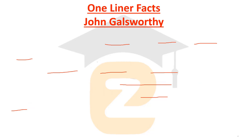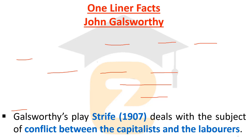The next important fact is about John Galsworthy's play Strife, published in 1907. It deals with the subject of conflict between the capitalists and the liberals. The subject matter discussed in his plays was related to social injustice and social issues, and Strife specifically explores the theme of conflict between capitalists and liberals.